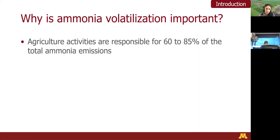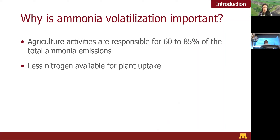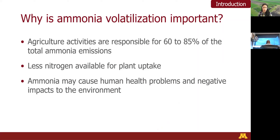Why is ammonia volatilization important? Agriculture activities are the major source of ammonia volatilization, accounting for 60 to 85 percent of total ammonia gas emissions. When we lose nitrogen, it is no longer available for crop uptake. Also, ammonia can cause human health problems such as respiratory disease, and also negative impacts to the environment such as nutrient imbalances and eutrophication.